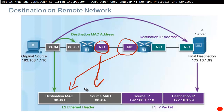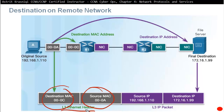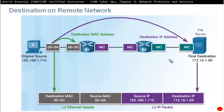The router strips the old Layer 2 header, puts its own MAC address as the source, and sets the destination MAC address to Router 2's MAC address — found via ARP table or a new broadcast. When the packet reaches Router 2, it checks the destination MAC, confirms it's for itself, strips those headers, and puts its own MAC as the new source before forwarding.